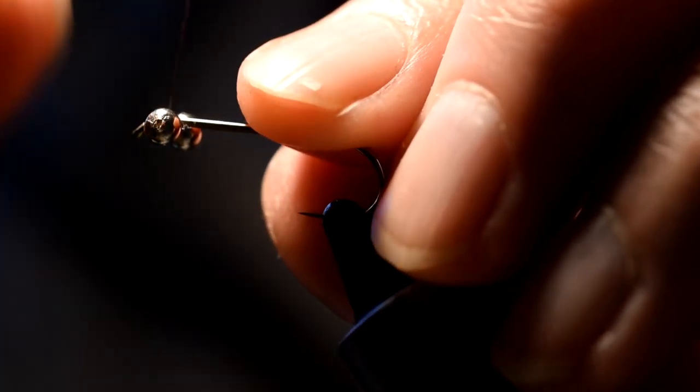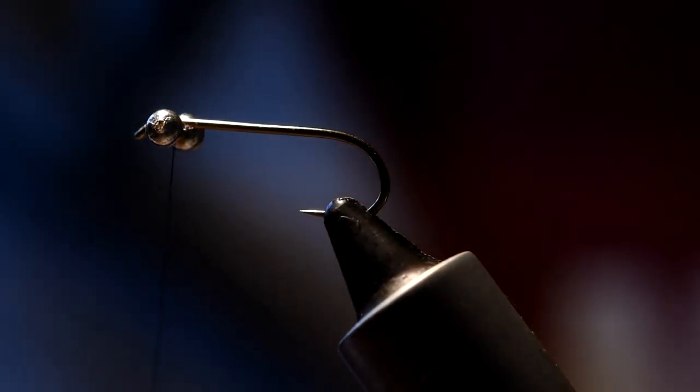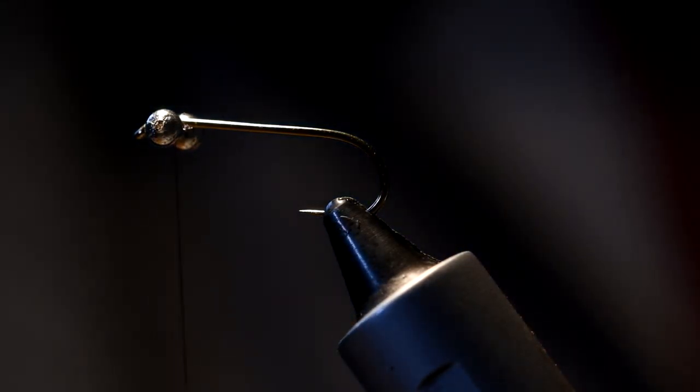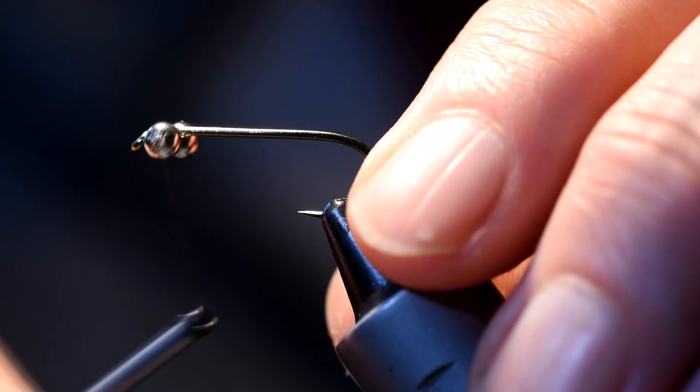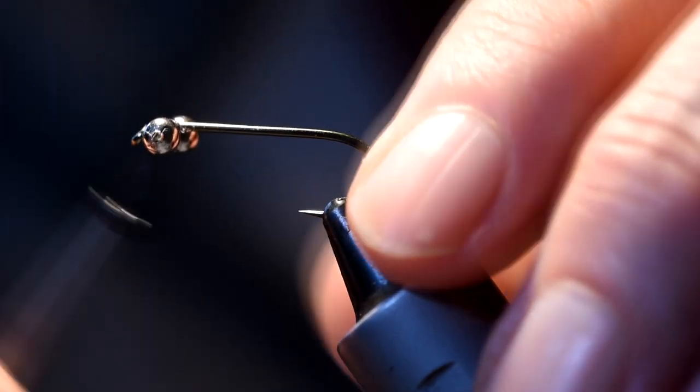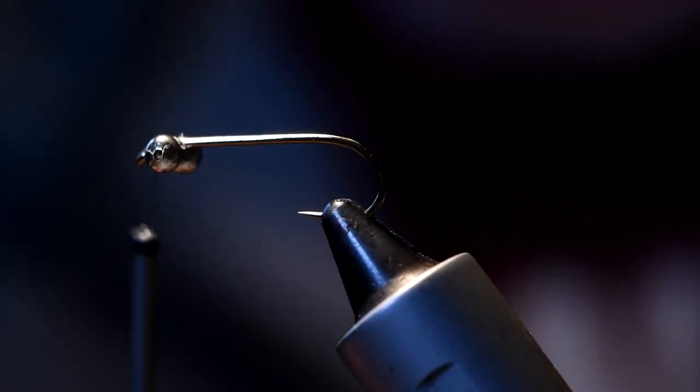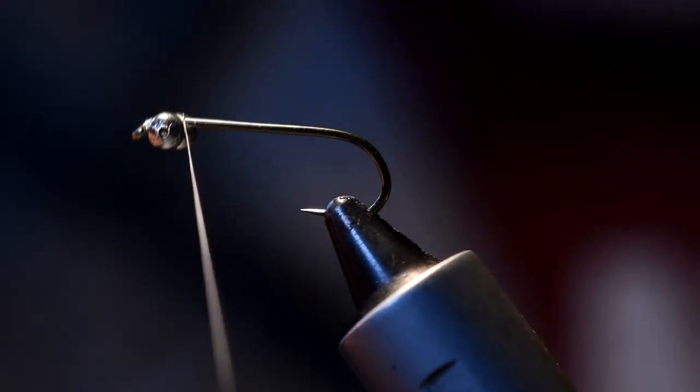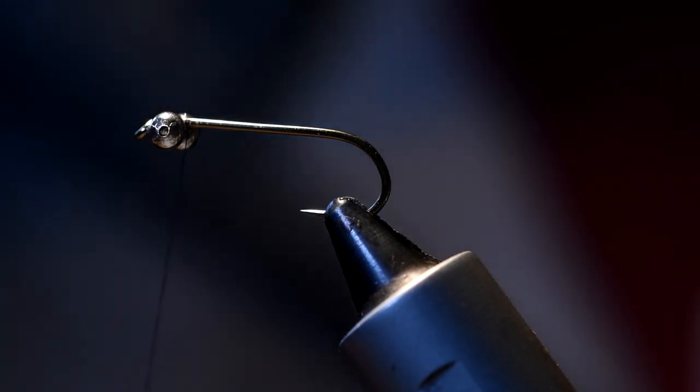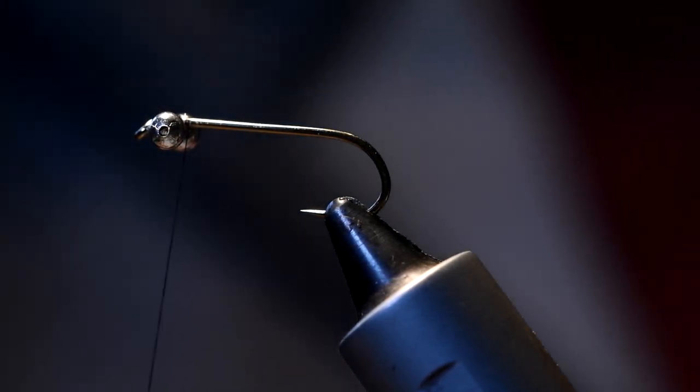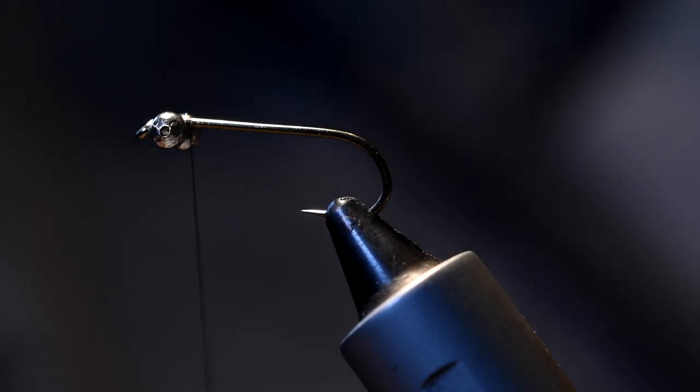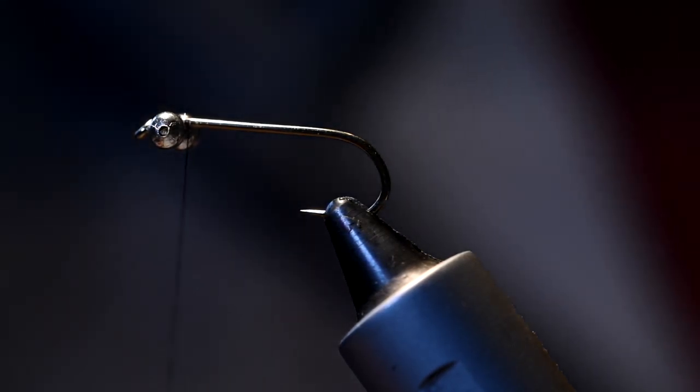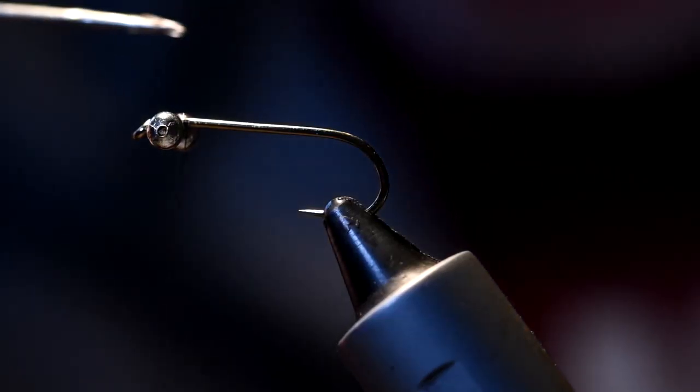You can fish it off a floating line or an intermediate, which is what I tend to do. So put a good few figure eight turns on there. And then a wee dab of super glue, which will secure everything and keep it tight. In my experience this fly has had such a batter, and the thing that tends to take the knocks is the bead chain eyes.